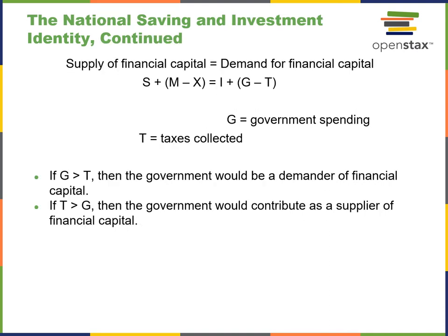Continuing with national savings and investment identity: when the government is spending more than it's pulling in through taxes, it will demand financial capital. This is what happens with quantitative easing — a shortage of cash for the government to conduct its business. The government will either print more money or do a stimulus package, as we've seen in recent years. Conversely, if taxes collected exceed spending, the government could be a supplier of financial capital, potentially leveraging other countries for favorable trade.